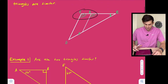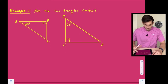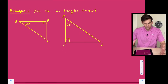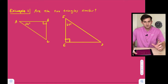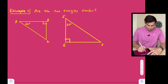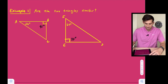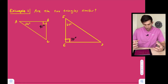Let's use this theorem to solve a couple of problems. Example one asks: are the two triangles similar? The key is we're looking for the three angles of the triangle to be congruent. We know that angle B and angle E have the right angle box, so we know those are 90-degree angles. So we're essentially trying to find the missing angle.